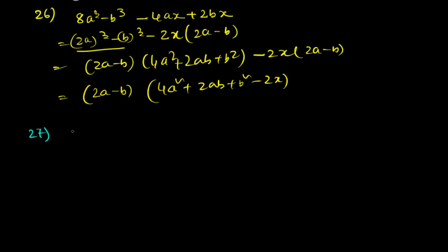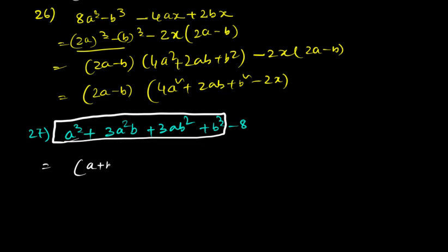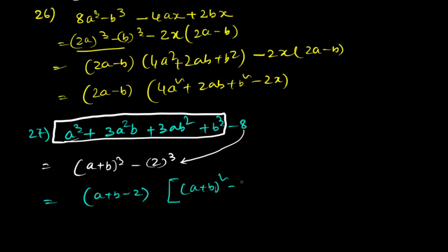Question 27: a³ + 3a²b + 3ab² + b³ – 8. Recognising the first four terms as (a + b)³, we rewrite as (a + b)³ – 2³, giving (a + b – 2)[(a + b)² + 2(a + b) + 4].